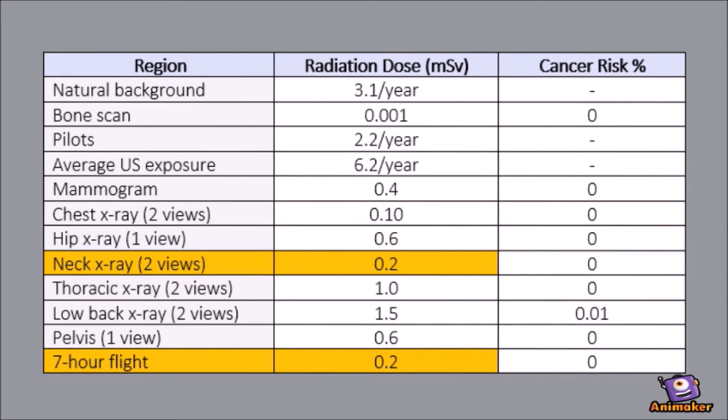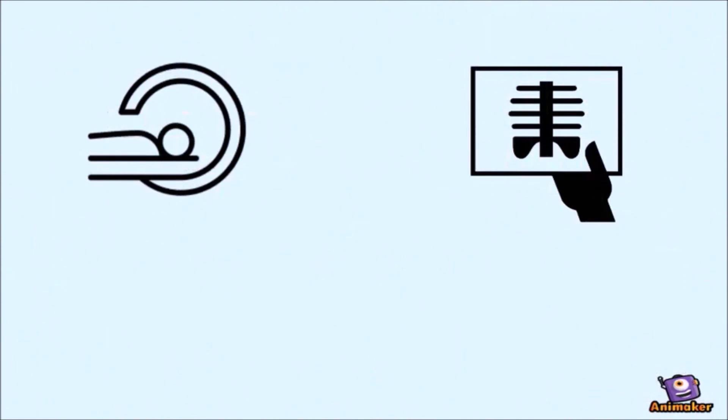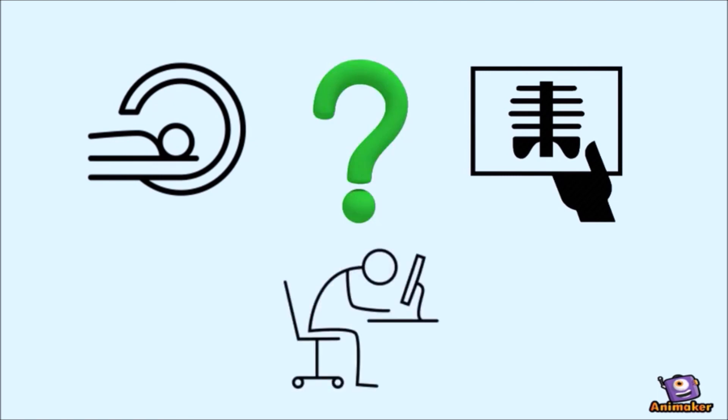The benefit from having a structural diagnosis provided by an X-ray far outweighs the risk of harmful radiation. So, in video two in this three-part series, we're going to discuss what imaging modality, X-ray or MRI, is the gold standard for analyzing your posture and spinal alignment.